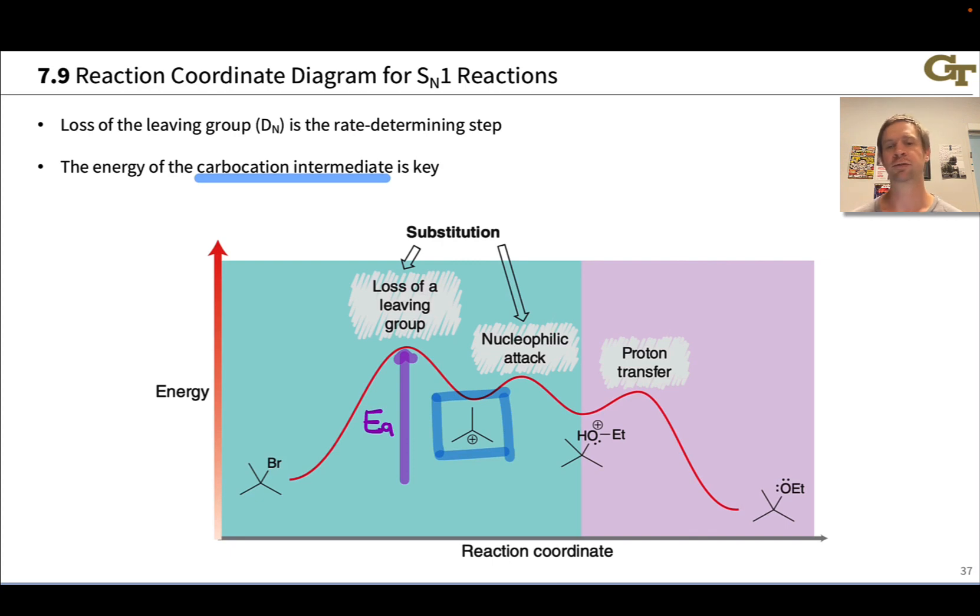After the initial slow loss of a leaving group step, nucleophilic attack and proton transfer are rapid, and generally exothermic. This makes the reaction exothermic overall. The leaving group is more stable than the initial nucleophile, making the reaction thermodynamically favorable overall.